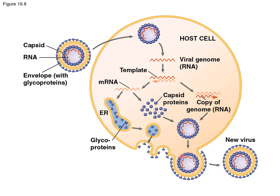The virus forms the capsid-coated genome inside the cell. When it exits the cell, this is where the envelope is incorporated — it starts to exit the cell like a vesicle, similar to how vesicles are formed during exocytosis.